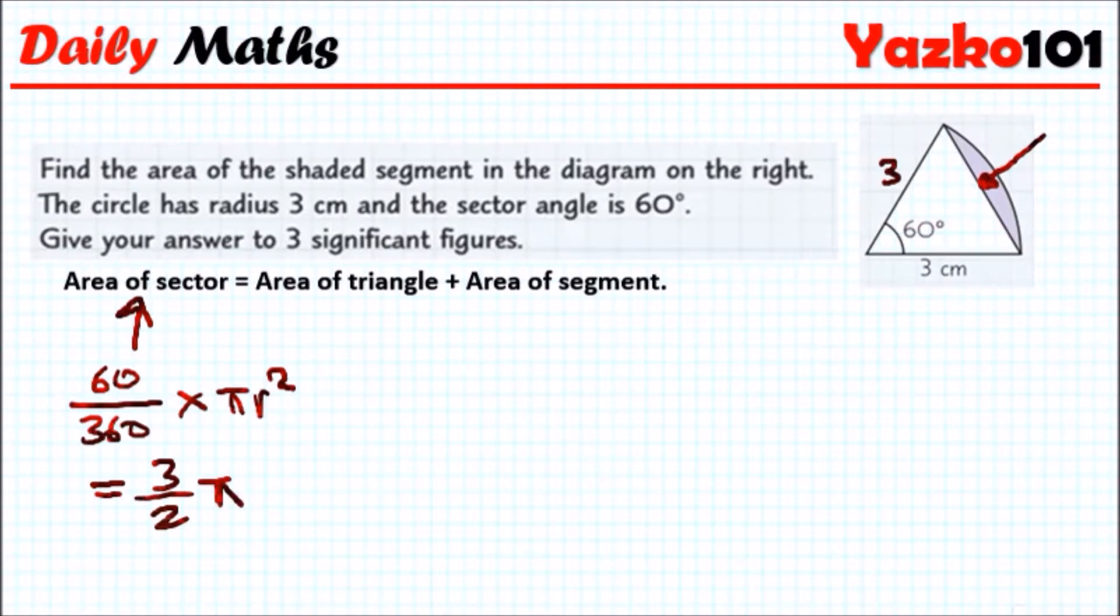Now for the area of a triangle, we have to use the formula which is 1/2 ab sin C. This is very standard—you need two lengths with an angle between the lengths.